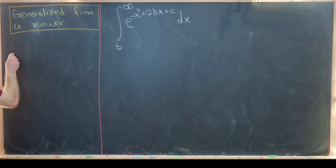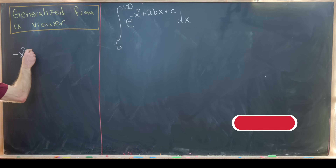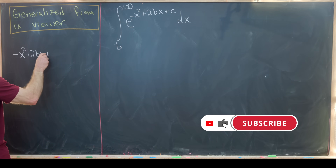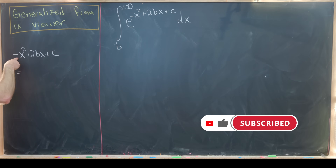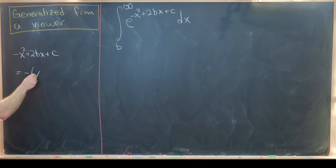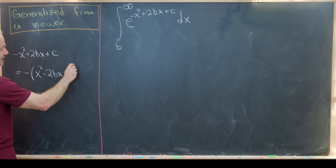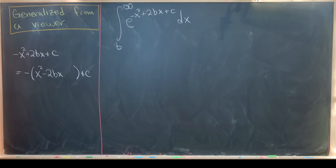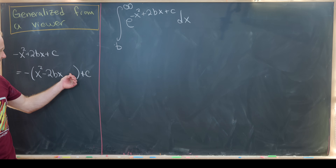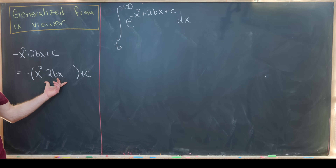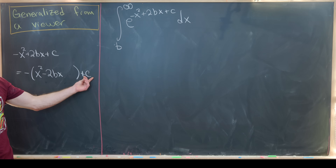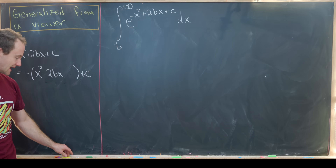Let's take this quadratic polynomial that's in the exponent and complete the square. So we've got minus x squared plus 2 times bx plus c. I can factor a minus sign out and that gives me x squared minus 2bx, and then I've got a plus c outside. Now I want to add something in here so that this becomes a perfect square binomial.